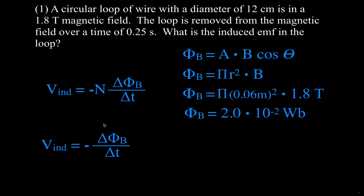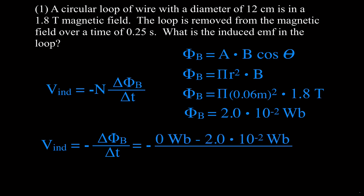Using the EMF equation with N=1, don't forget the minus sign. The change in magnetic flux is the final minus the initial: zero minus 2.0×10⁻² divided by the time of 0.25 seconds. Because it's zero minus some positive value, and there's a minus sign in front, the induced voltage is positive 8.0×10⁻² volts. You've got to keep your minus signs straight here.